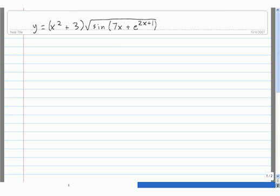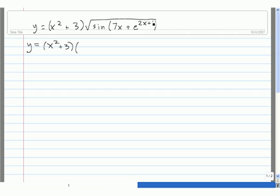To differentiate this function, we should start by writing this portion in terms of exponents. So instead of having a square root, we have sine of 7x plus e to the 2x plus 1, all raised to the 1/2 power.